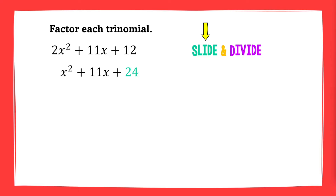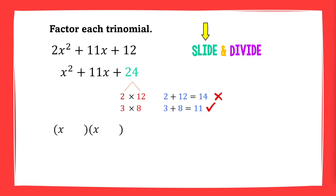Now we factor this trinomial by finding the factors of 24 whose sum is 11. Let's try 2 and 12 — does it give you a sum of 11? No. So we try another pair of factors. How about 3 and 8? Yes, it does give you a sum of 11. So we set up the binomials by putting x in each and placing 3 and 8 in separate binomials.